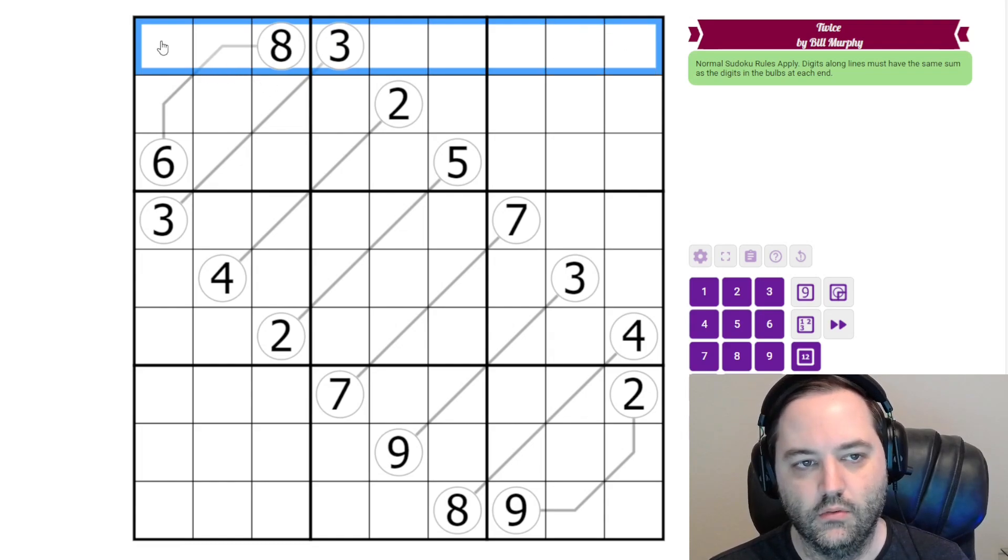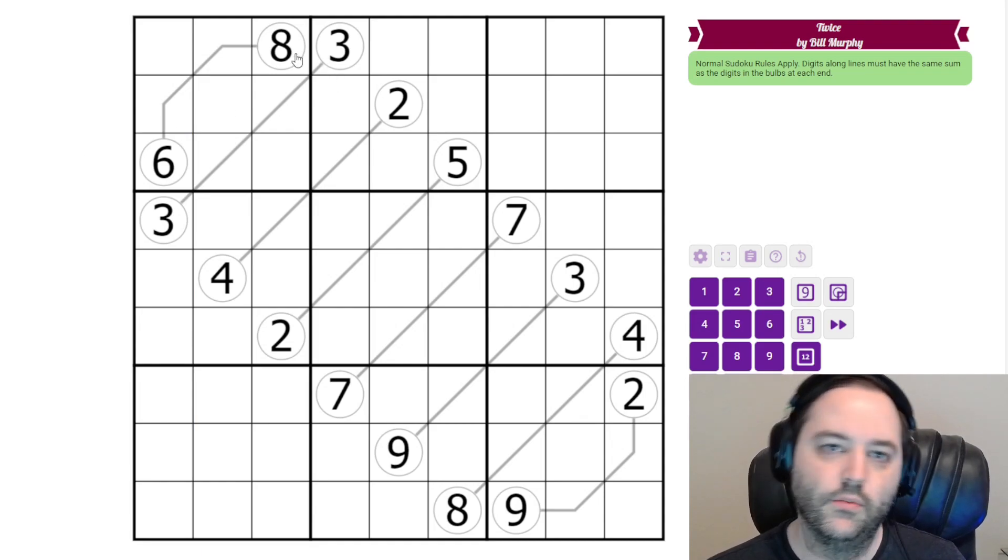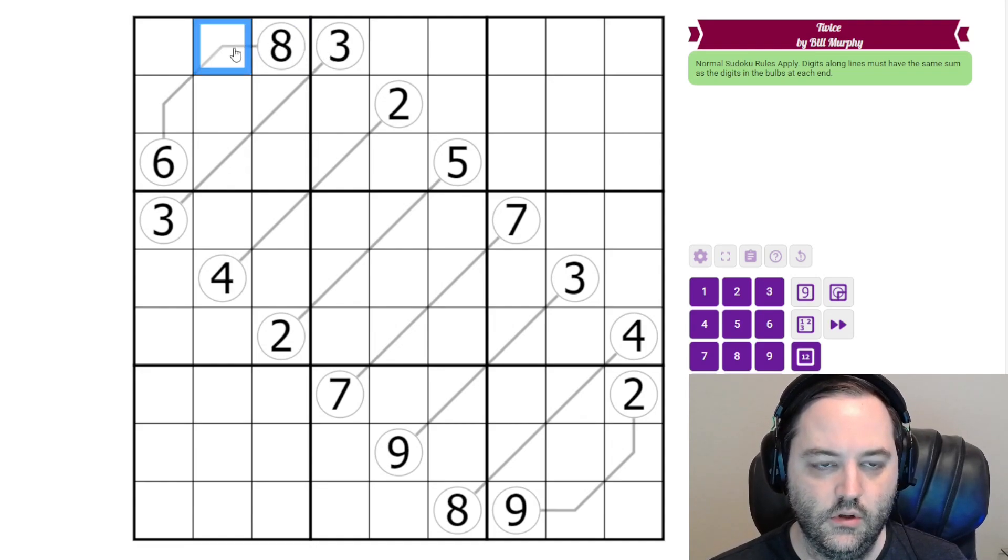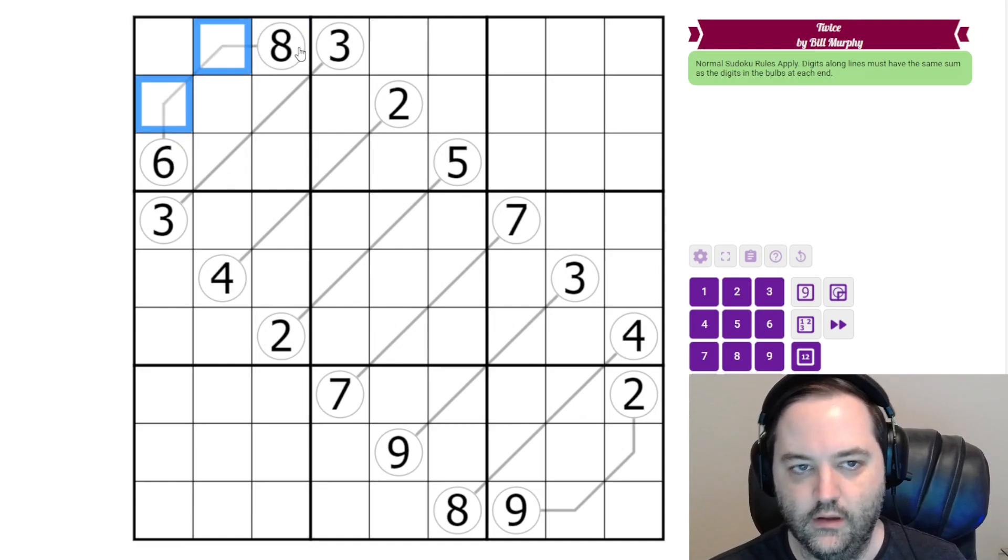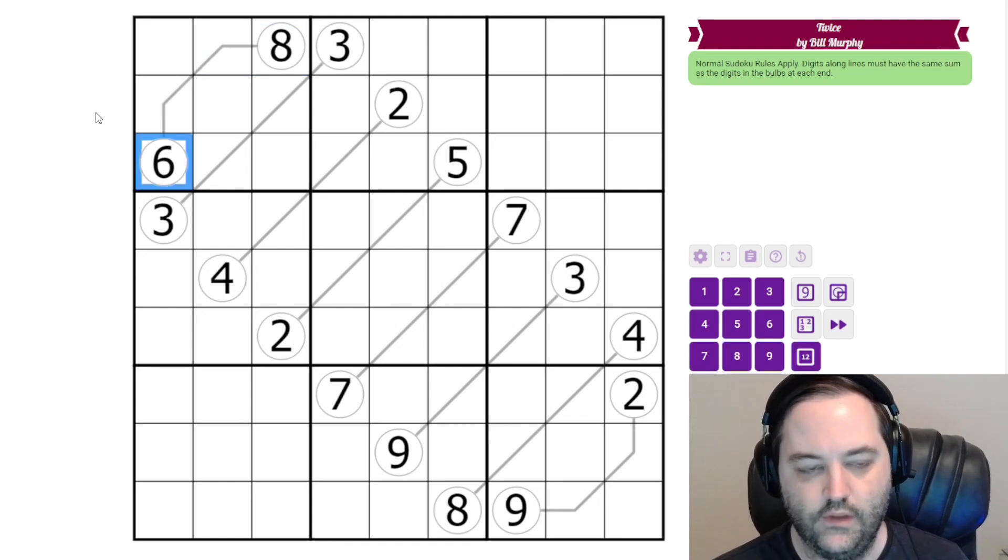We have normal Sudoku rules, one to nine in each row, column, and three by three box. Additionally we have these clues that are like arrows but without the arrow part. Instead of a circle with a line containing an arrow at the end, we have a circle with a line containing another circle at the end.